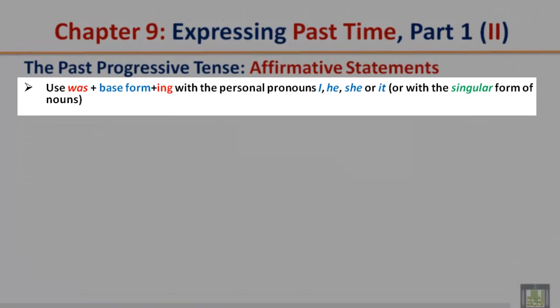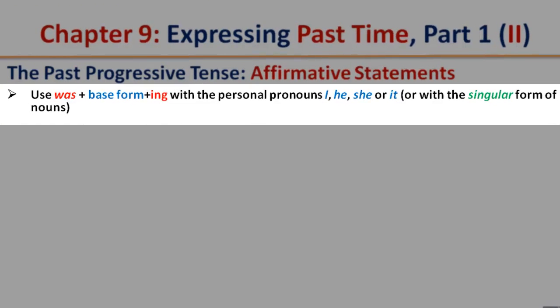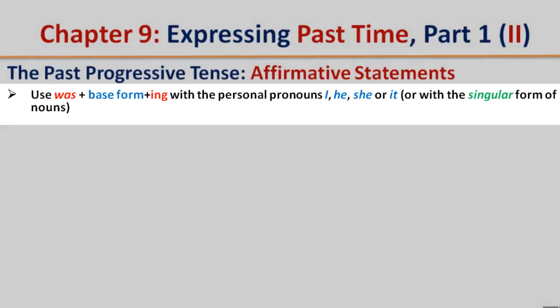Use 'was' plus the base form plus '-ing' with the personal pronouns I, he, she, or it, or with the singular form of nouns.